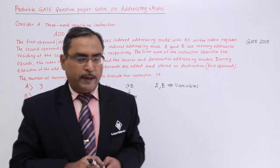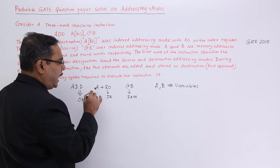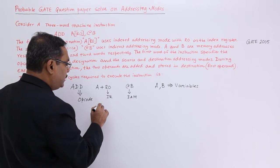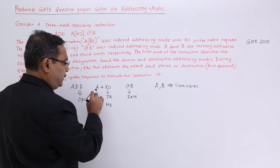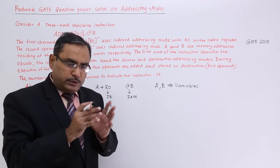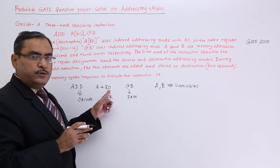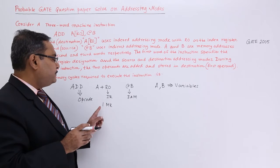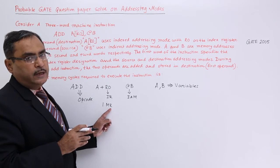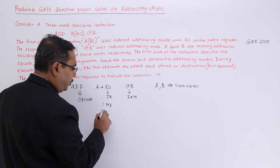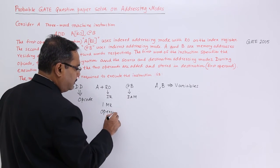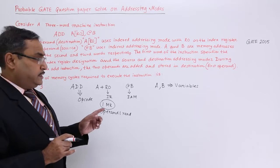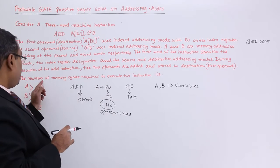Let me solve this. For operand 1, I need to get the address stored in variable A, which requires one memory read. A is holding the address; that address plus register r0's content will be added to get the data address. From that address I shall read the data. So for operand 1 read, I require one memory read or machine cycle.